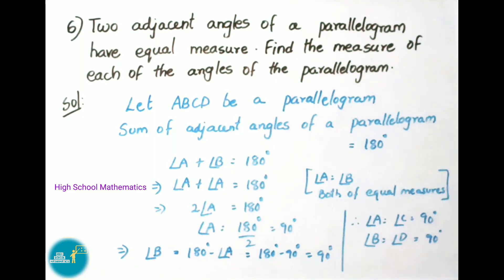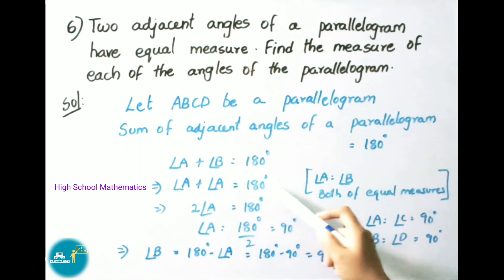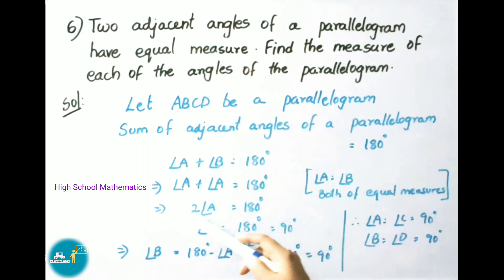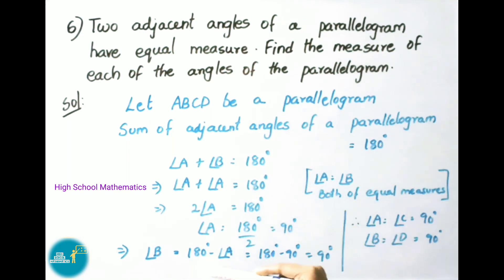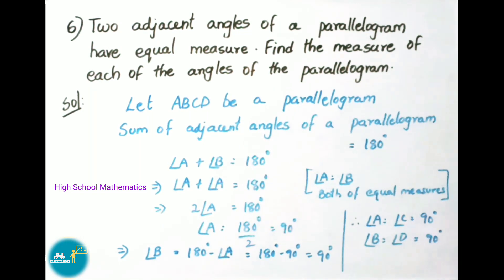Since both adjacent angles are of equal measure, angle A equals angle B. So we can write angle A plus angle A equals 180 degrees, giving 2 times angle A equals 180 degrees, therefore angle A equals 90 degrees. Similarly, angle B equals 180 minus 90 equals 90 degrees. Since opposite angles of a parallelogram are equal, angle A equals angle C equals 90 degrees and angle B equals angle D equals 90 degrees.